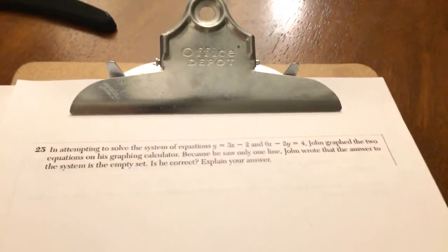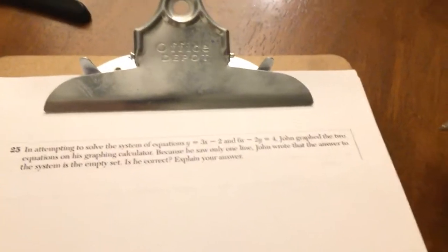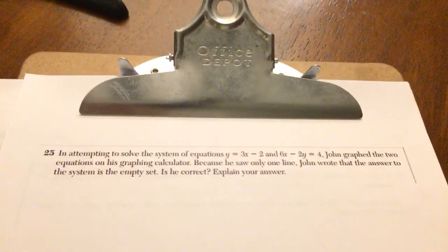Number 25, in attempting to solve the equation, John graphed the two and saw only one line. He wrote the answer is the empty set. Is he correct?